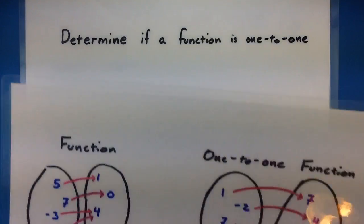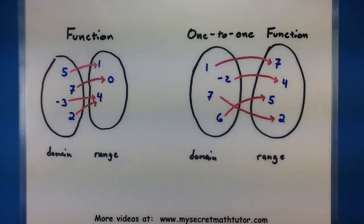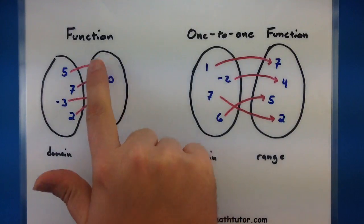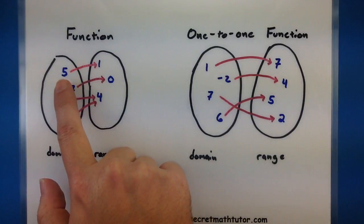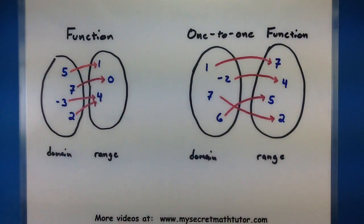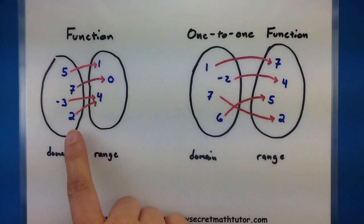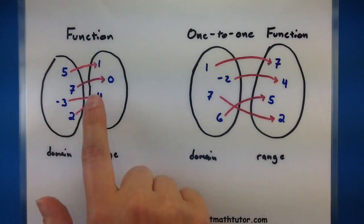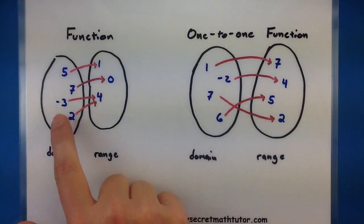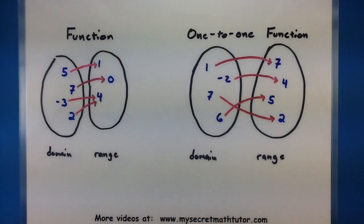So to make this idea a little bit more concrete let's look at an example of a function versus a one to one function. Here in a function we have particular inputs and they're mapped to particular outputs. And this is a function because every time I have a particular input it goes to one output. Now you may notice that down here both the negative three and the two go to four. Now this is not a problem with being a function, but this type of situation makes it not a one to one function because we have two inputs that go to the same output.